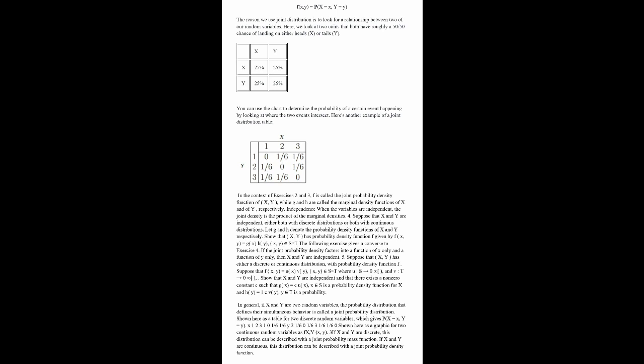Here's the image, and you can use the chart to determine the probability of a certain event happening by looking at where the two events intersect. Here's another example of a joint distribution table.